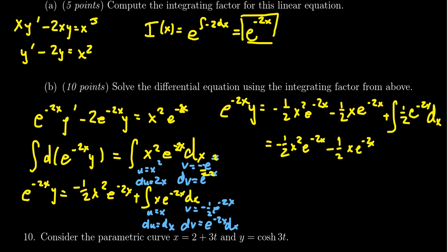Taking the antiderivative of e to the negative 2x again gives negative one-fourth — the one-half already present combines with the new one-half from the antiderivative to give one-fourth. So we get negative one-fourth e to the negative 2x, plus a constant C. Don't forget the plus C — that's very important with this differential equation.